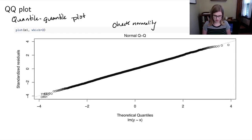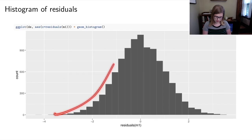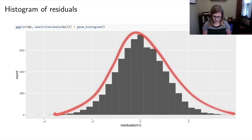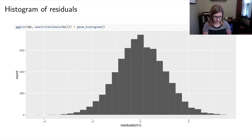Another way to check normality is to look at a histogram of the residuals, which you can make using ggplot. I'm personally better at assessing normality from a QQ plot than from a histogram, mostly because I've looked at many QQ plots — but the histogram is also a valid tool for checking normality.